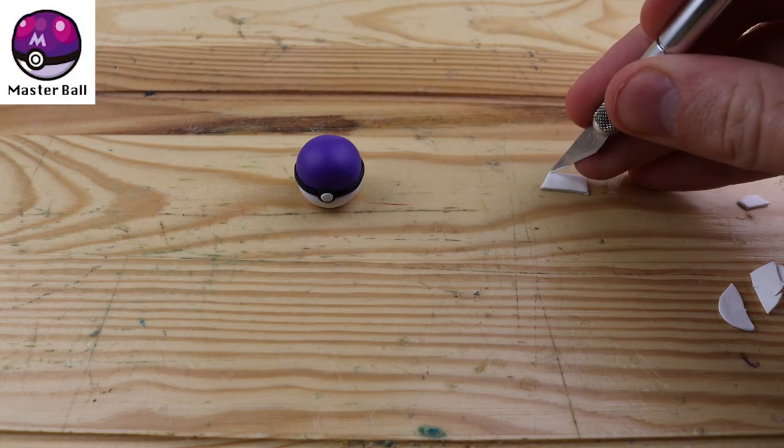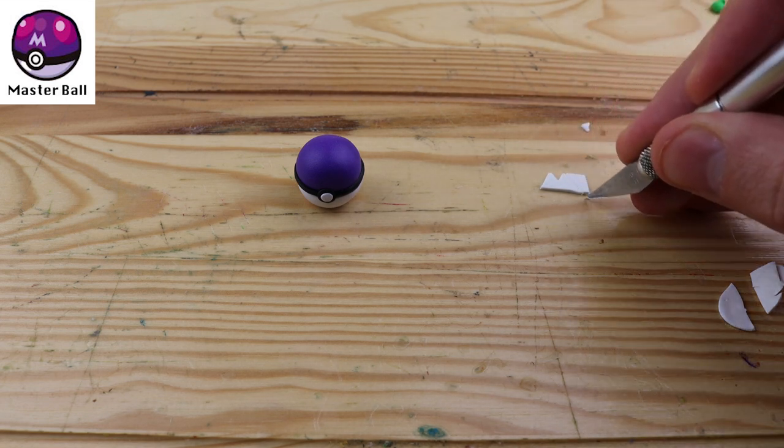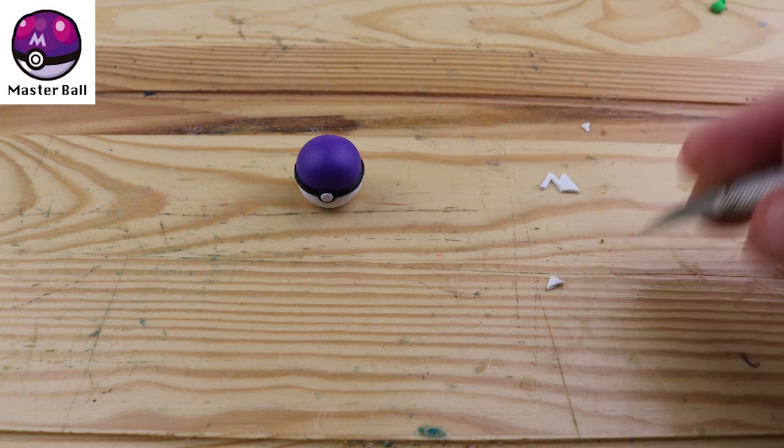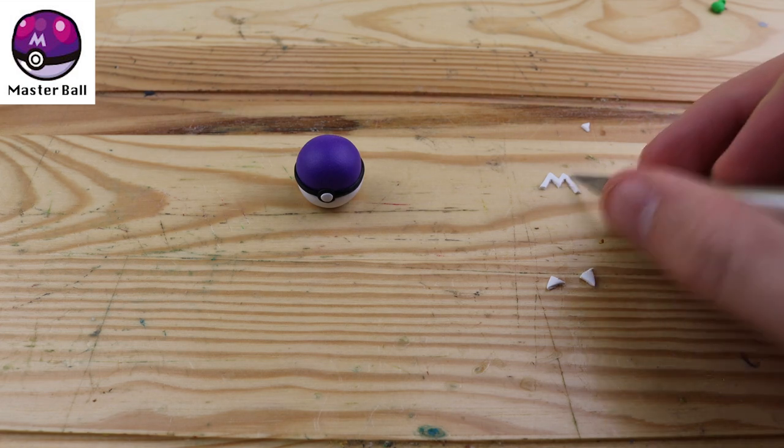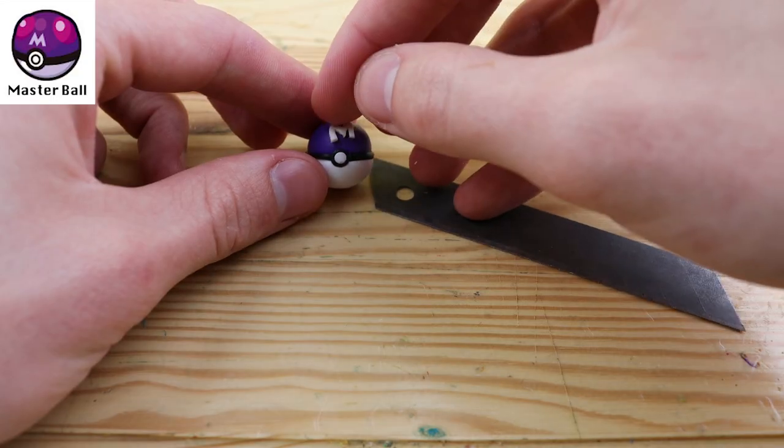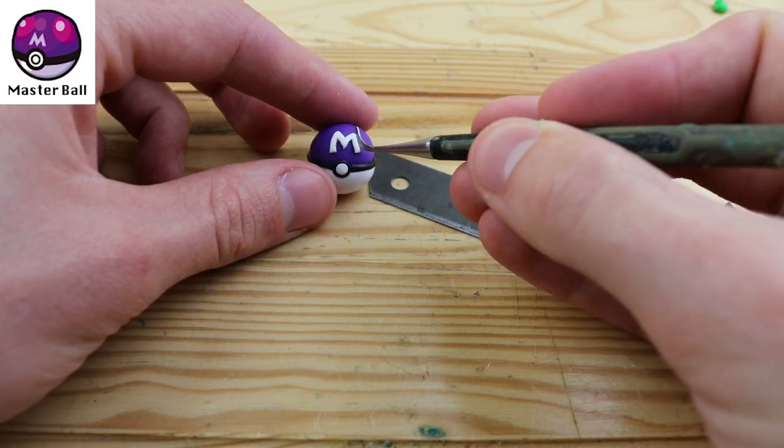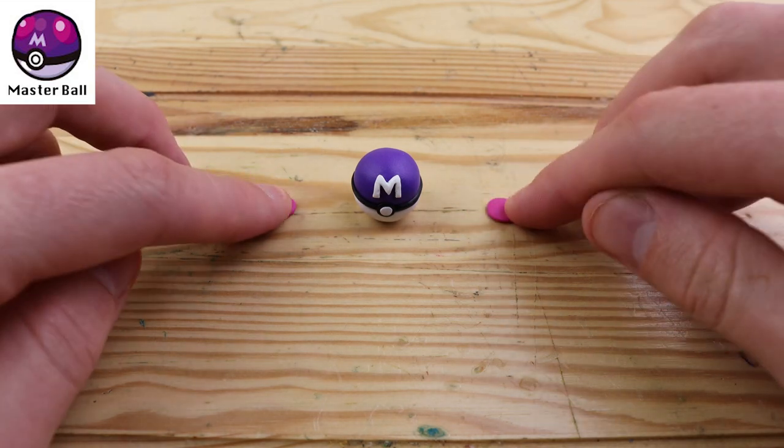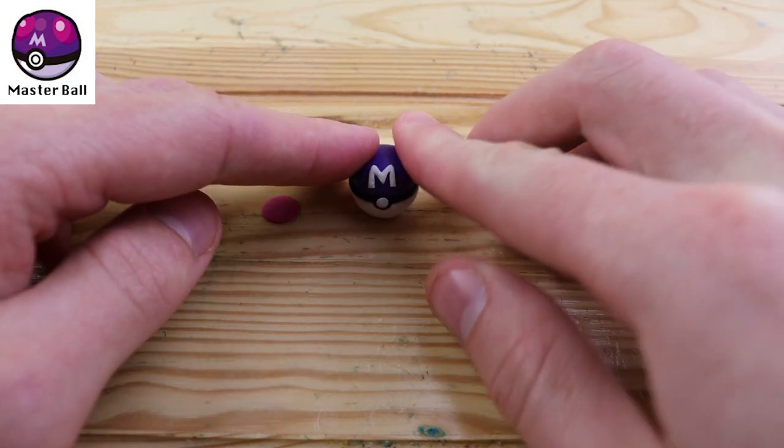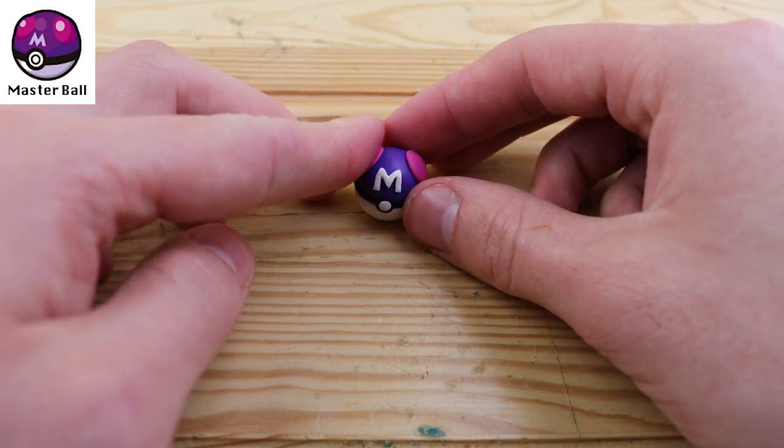Next, we have my favorite, the master ball. I really love the design of this. I think the purple really makes it stand out from all of the other pokeballs. And the ability on this pokeball is unlike any other one. You can catch any single pokemon on your first try, you will never fail. And I think this also includes legendary pokemon. For the final details, we have these two little pink blobs. We can place one on each side.